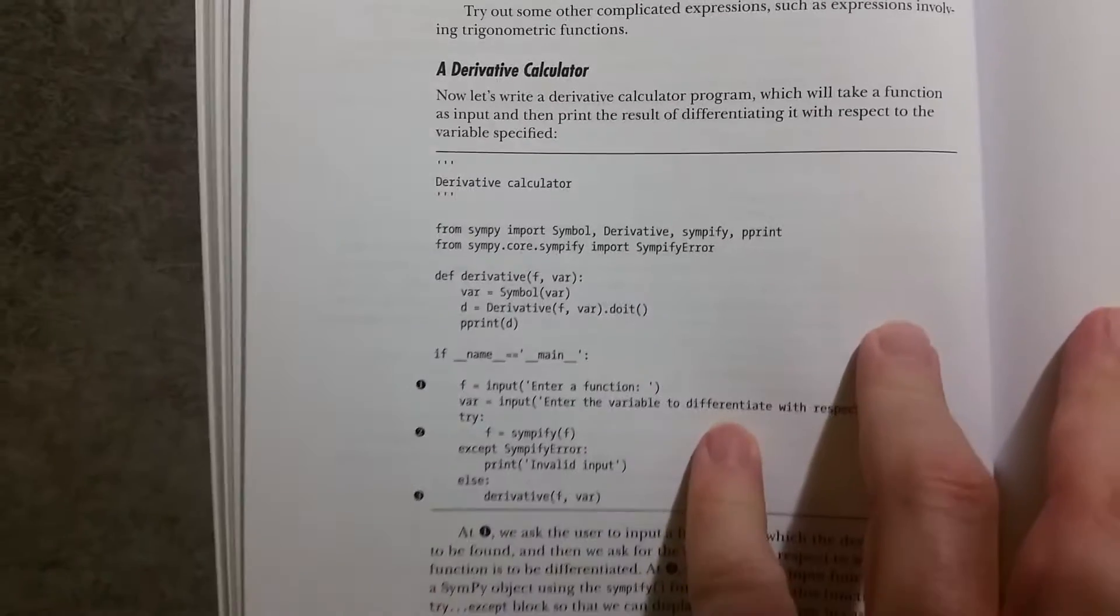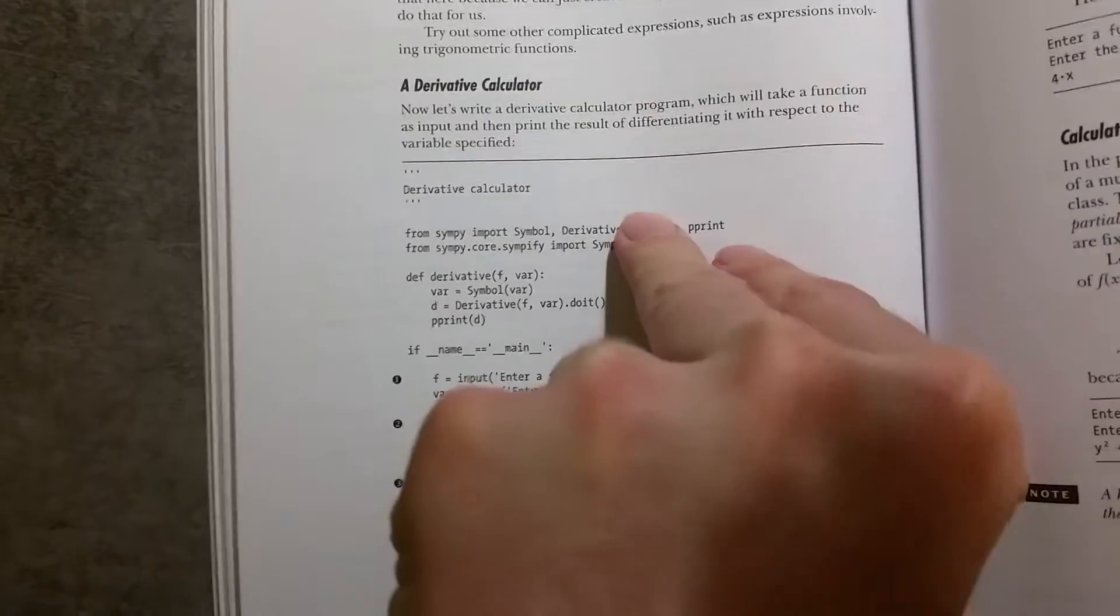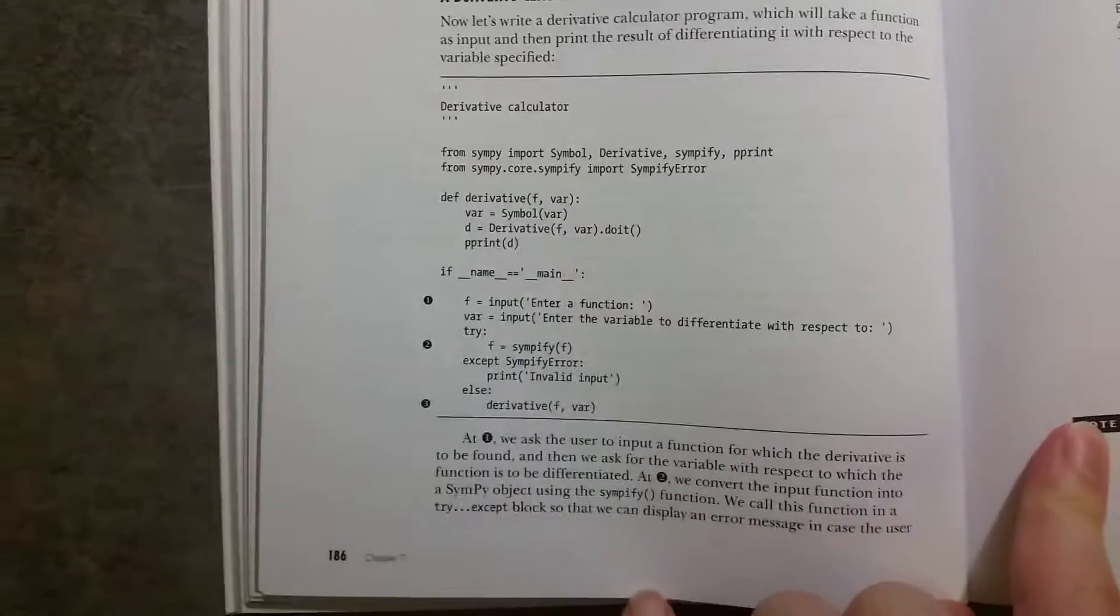And again, they introduce a concept, they describe what they're going to do, they write the code, and then they explain what the code does line by line.